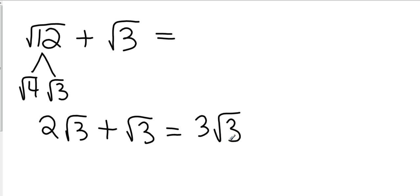Some of you look at square root of three and don't remember that that's one square root of three. There's always a one — kind of like the x thing. We don't put a one in front of the x, but we know it's one x. Anytime you see something and it doesn't have anything in front of it, if you struggle with that, put a one there. If I would have said two square roots of three plus one square root of three, most of you would say three square roots of three. Can I break that down any further? No — this is my final answer.